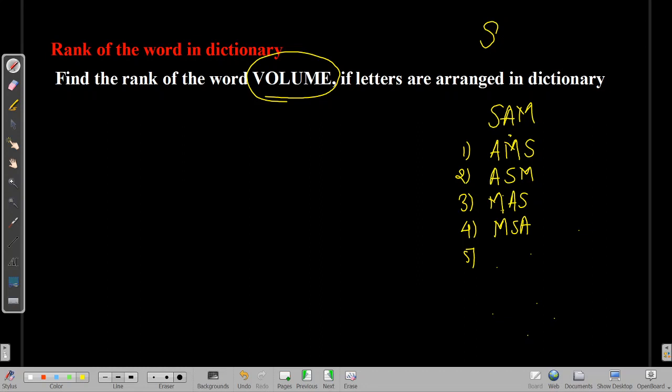Then M is done. Now we'll have S. S will come here. S, A, M. And the next will have S, M, A. So starting with the lowest, moving towards the highest alphabet. This is how the words are arranged in a dictionary.